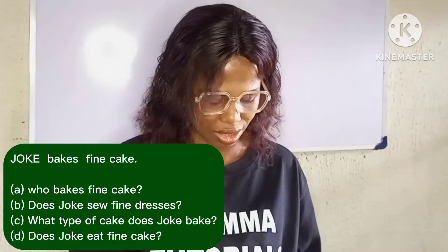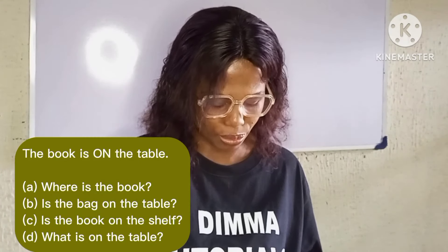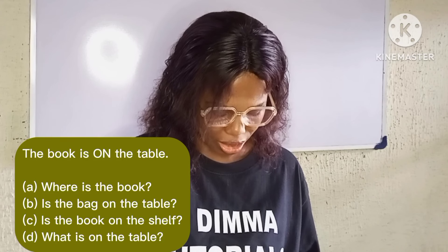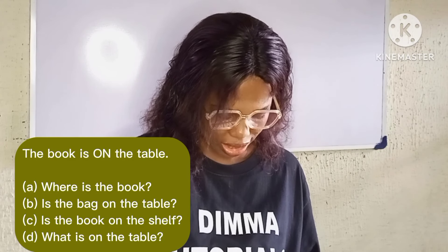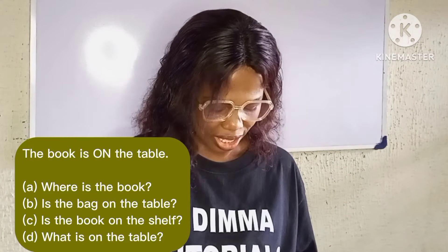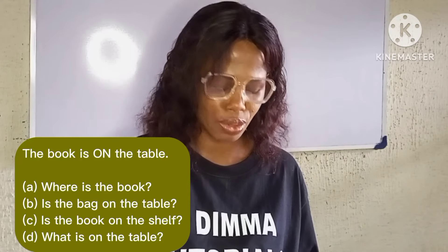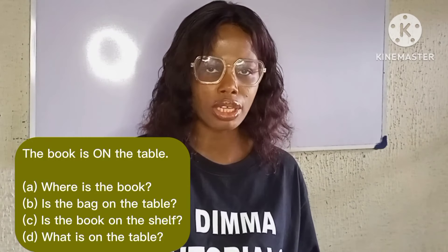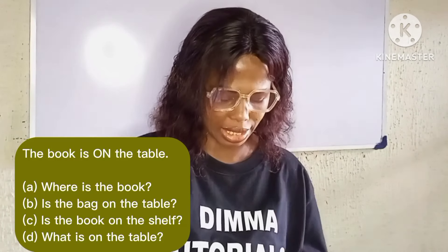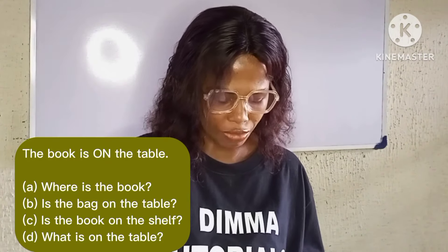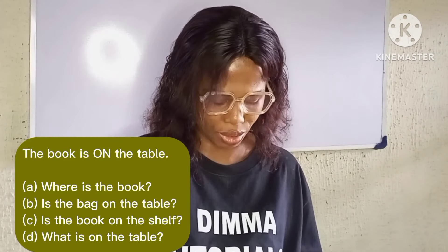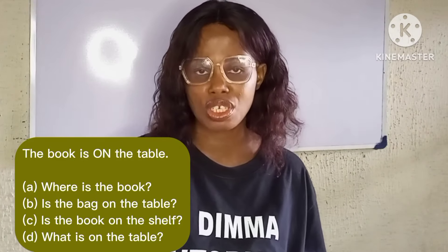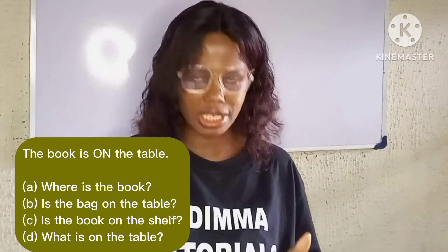Next question: 'The book is ON the table.' The emphasized word is 'on.' Option A is 'Where is the book?' If I tell you the book is on the table and you ask 'where is the book?', I would say ON the table — I would emphasize 'on.' Option B: 'Is the bag on the table?' — I would emphasize 'book.' Option C: 'Is the book on the shelf?' — I would emphasize 'table.' Option D: 'What is on the table?' — I would say 'the book,' but the emphasized word is 'on,' not 'the book.' So option A is the correct answer.